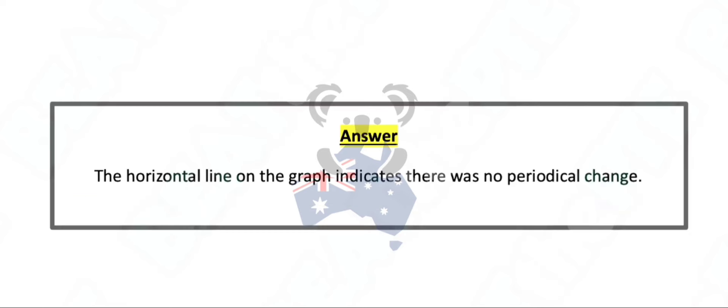The horizontal line on the graph indicates there was no periodical change.